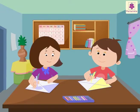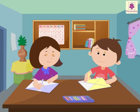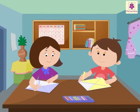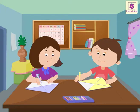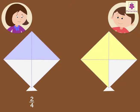A coloring competition is going on between Andy and Anaya. Let's find out who colors more and also learn about comparing fractions with them. First is the kite coloring round. Anaya colored two-fourths of the kite and Andy colored three-fourths of the kite.